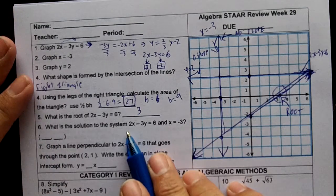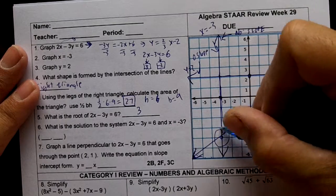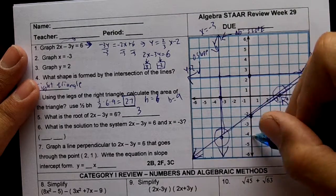What is the solution to the system 2x minus 3y and x equals negative 3? That's where the lines cross. It crosses right here at negative 3 comma 4.